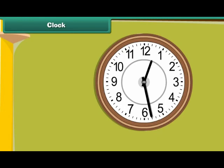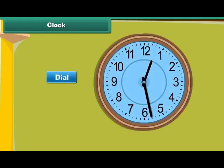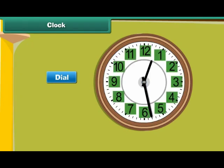Look at this clock. The visible side of the clock is known as its face. It has a dial. The dial has 12 equal divisions. These divisions are numbered from 1 to 12.